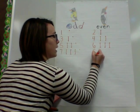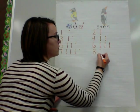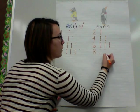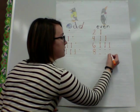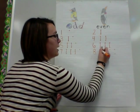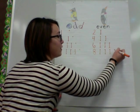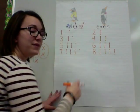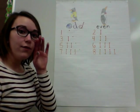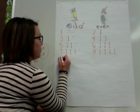Now we're doing the number eight: one, two, three, four, five, six, seven, eight. And if we follow the pattern that we have seen, you'll see that once again all of those dots have someone to partner up with.